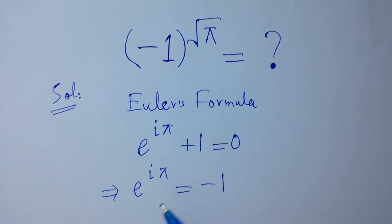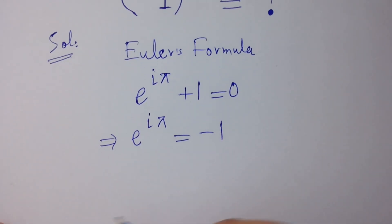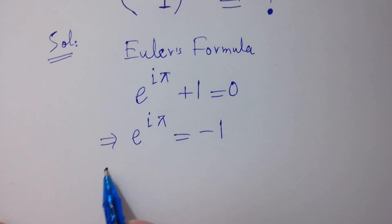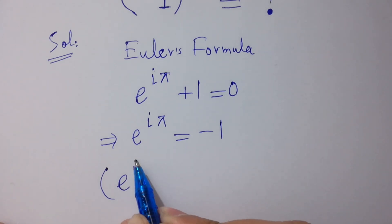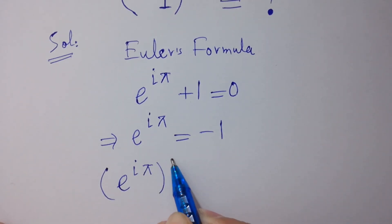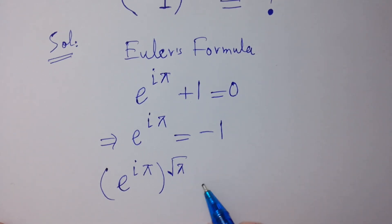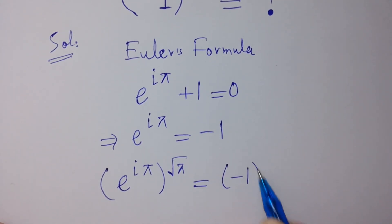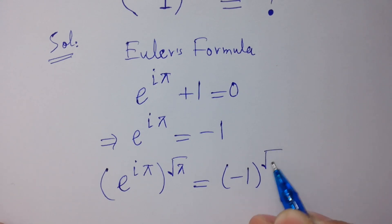Since this has an exponent of square root of pi, we take the exponent of square root of pi on both sides: e to the power i·pi, to the power square root of pi, equals minus 1 to the power square root of pi.